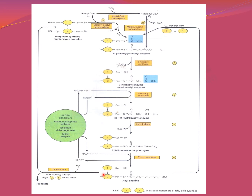In each cycle, the acyl enzyme is recycled back so the cysteine SH group is re-engaged; the acetyl group attaches, cycles through, and 2 carbons are added per cycle, resulting in the progressive formation of palmitate.